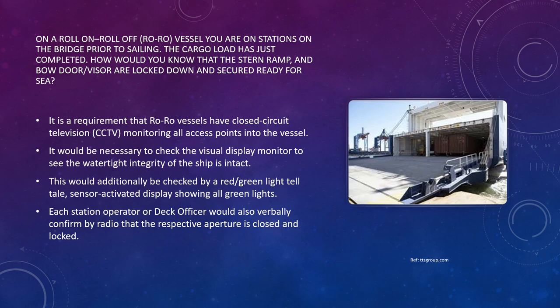The third question: on a roll-on roll-off (RoRo) vessel, you are on station on the bridge prior to sailing and cargo loading has just completed. How would you know that the stern ramp and the bow door or visor are locked down and secured ready for sea? RoRo vessels carry cars, vehicles, containers, or passengers in various combinations. One past incident involved a vessel's bow door being left open; rough seas shipped water inside and the ship sank with great loss of life.